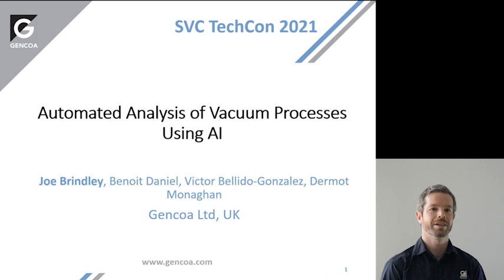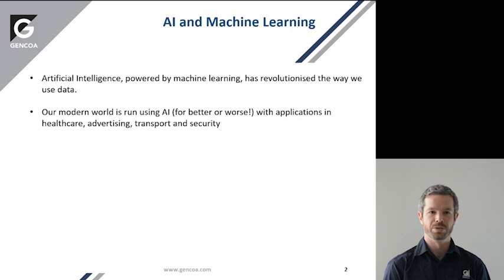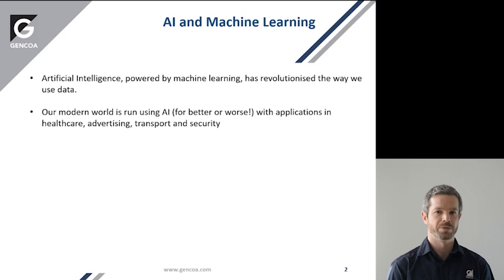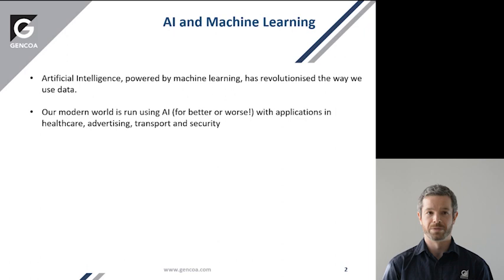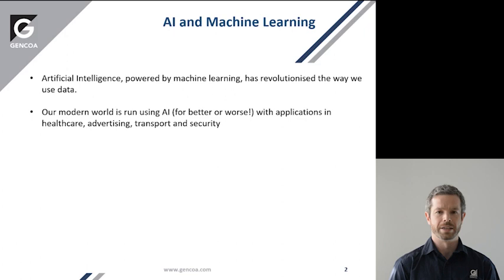Artificial intelligence, which is powered fundamentally by machine learning, has revolutionised the way we interpret, use, and analyse data. It underpins many important things within our modern world, with applications in healthcare such as screening for cancer, advertising — which is why you now have adverts targeted for you based on your browsing habits — transport such as self-driving cars, and security such as automated fraud detection, where it's looking for patterns of credit card usage that would indicate fraud.